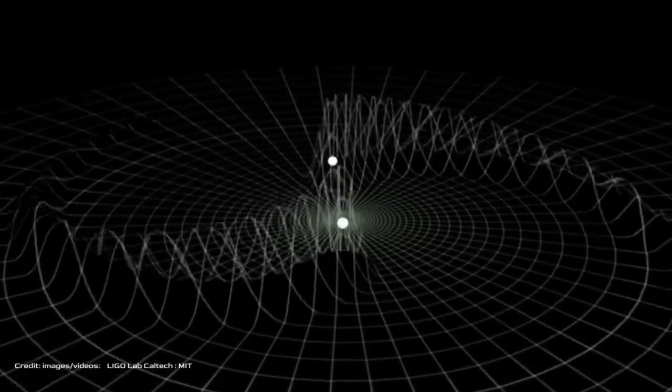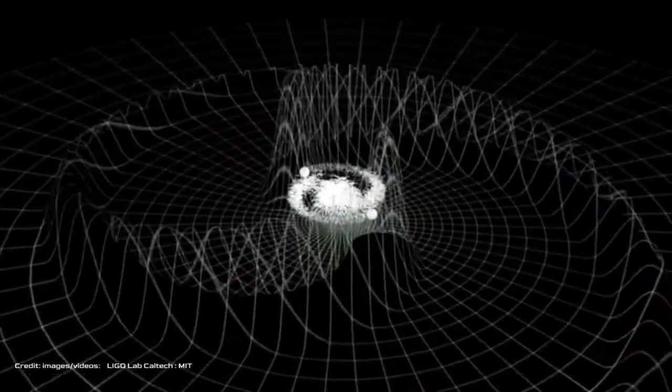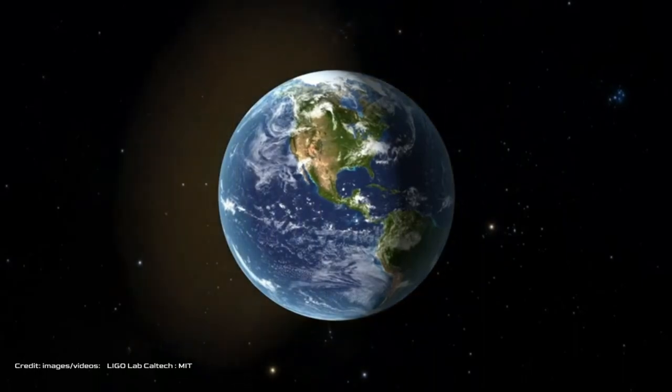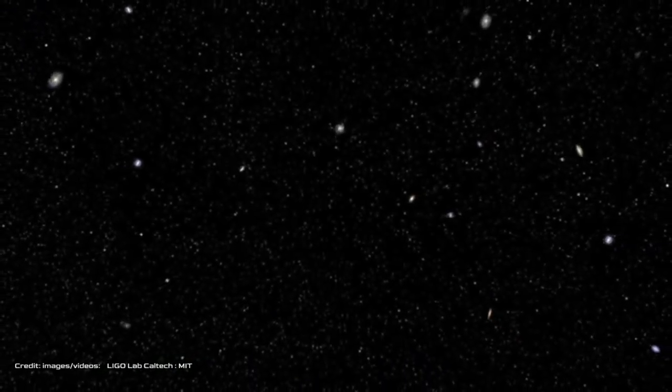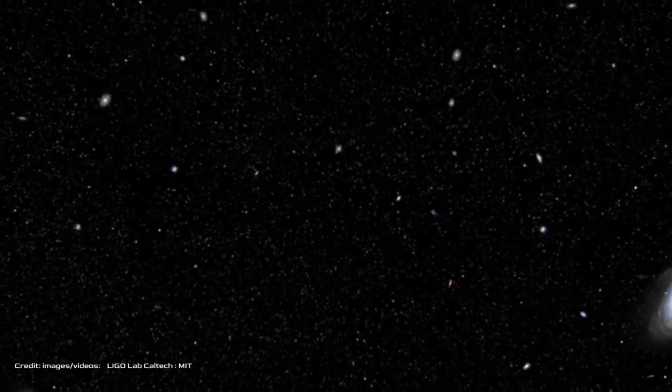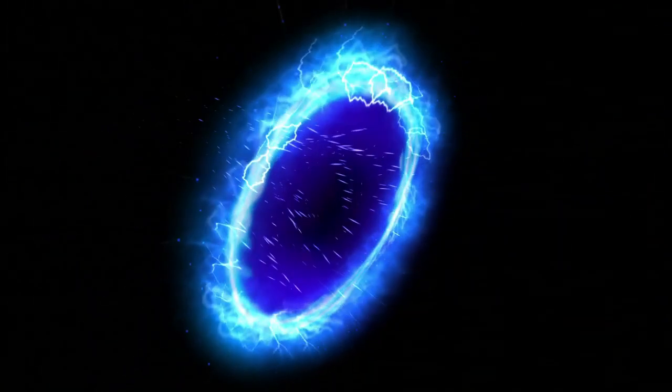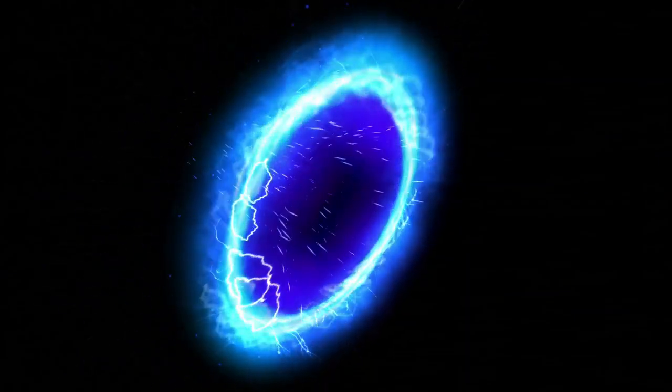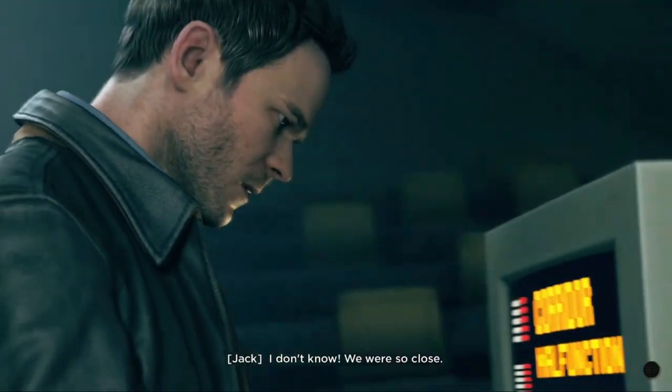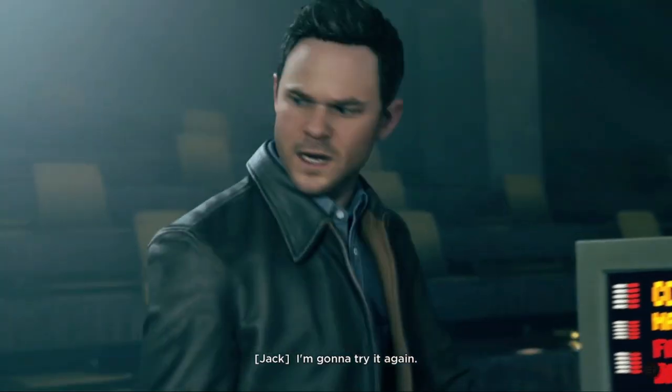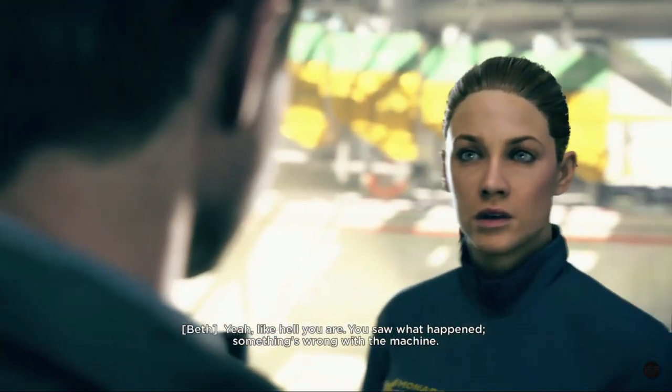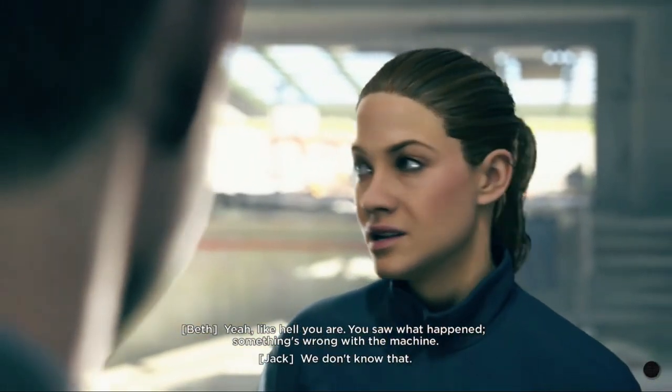The discovery of gravitational waves is a remarkable confirmation of the theory of general relativity because it shows that space and time are dynamic and can be distorted by matter and energy. It predicts that accelerating masses can produce ripples in the fabric of space-time. But what does this have to do with time travel? Well, one of the implications of general relativity is that time is not absolute, but relative. This means that time can run faster or slower depending on the speed or gravity of the observer.